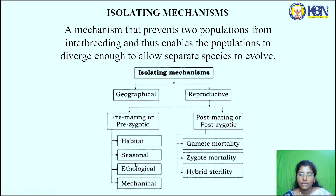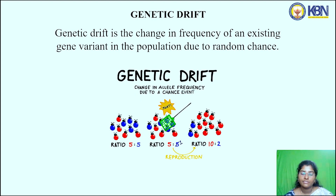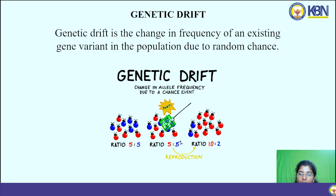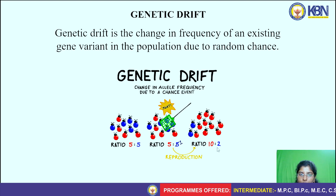Post-mating isolation includes gamete mortality mechanisms, zygote mortality mechanisms, and hybrid sterility mechanisms. Genetic drift is the change in the frequency of an existing gene variant in a population due to random chance — a change in allele frequency due to a chance event. For example, if five red bugs and five blue bugs are present, and four of the blue bugs are removed by some chance event, the gene frequency changes to a 10:2 ratio. This is called genetic drift.